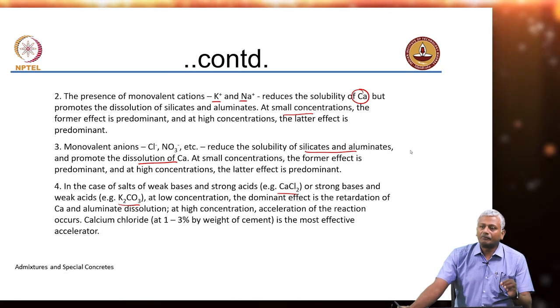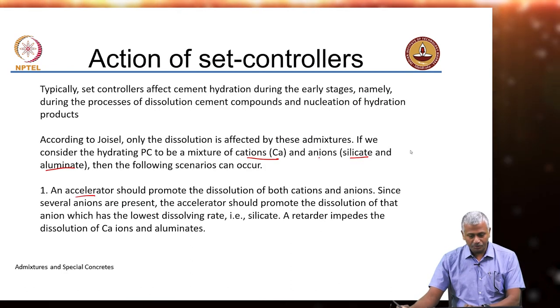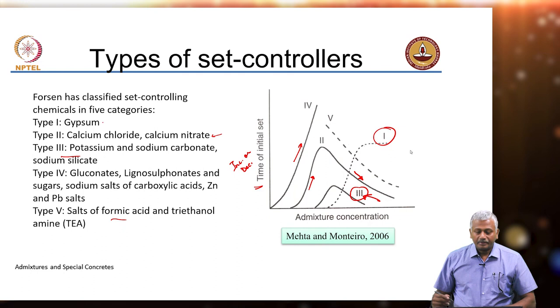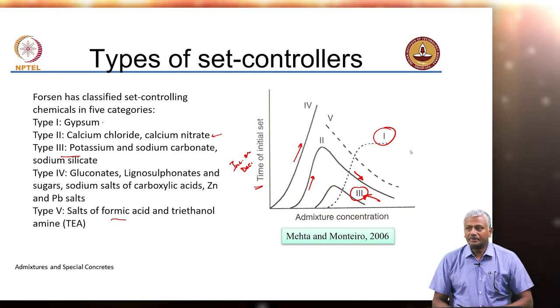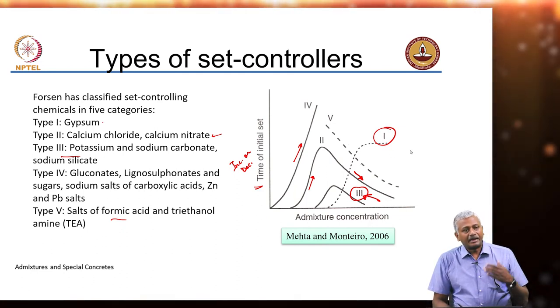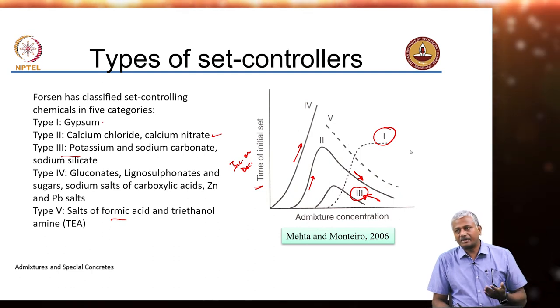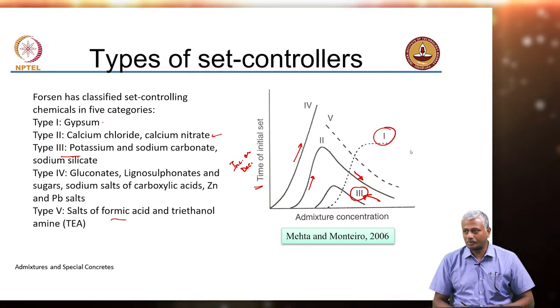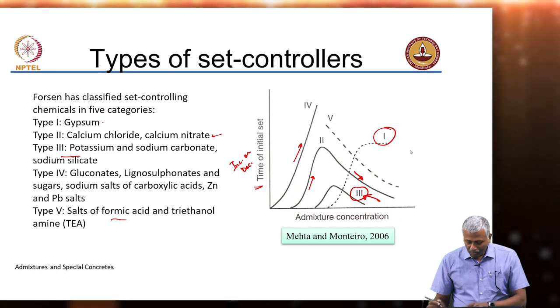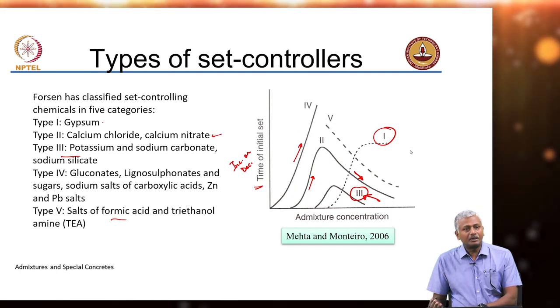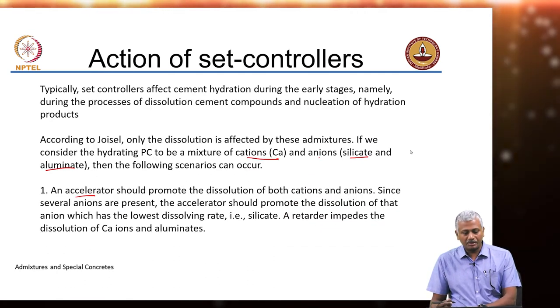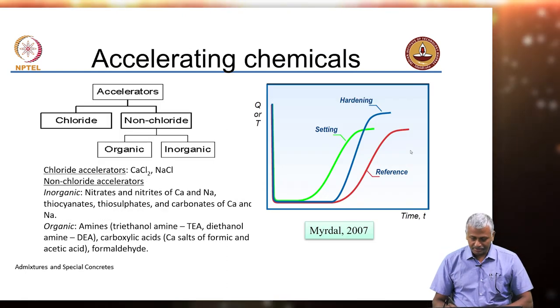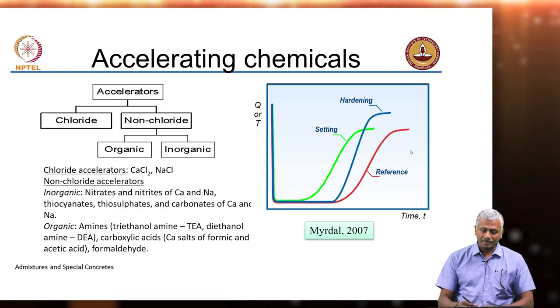In such cases you have to be very careful about the dosage that you use. In some instances at low dosage the retardation effect was dominant, at high dosages the acceleration effect was dominant. So moving on from here let us now take a look at the type of chemicals that are used typically as accelerators and the types of chemicals used as retarders.